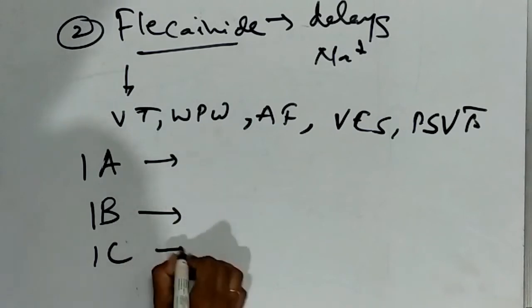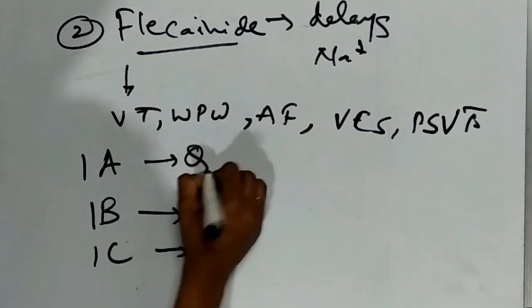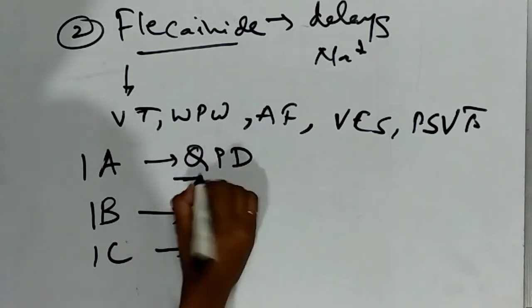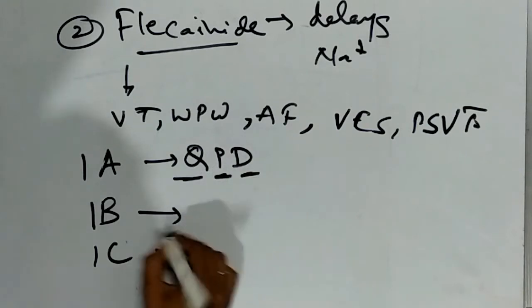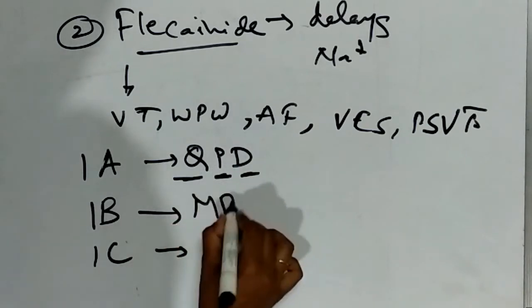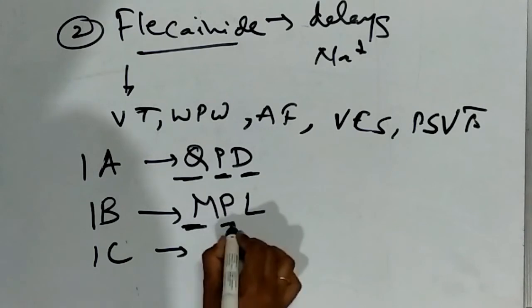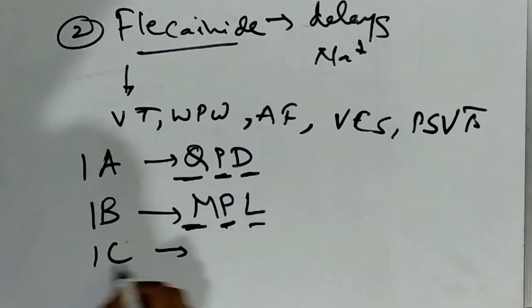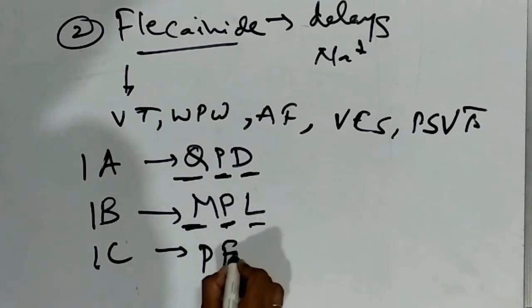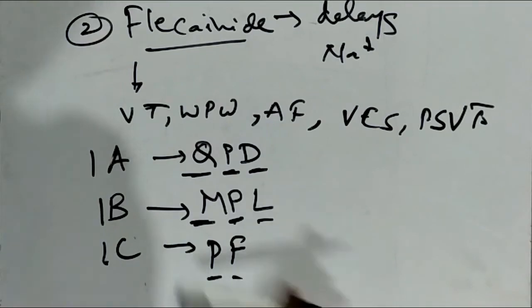The drugs in class 1A are QPD: quinidine, procainamide, and disopyramide. Class 1B includes MPL: mexiletine, lidocaine, and phenytoin. Class 1C is PF: propafenone and flecainide.